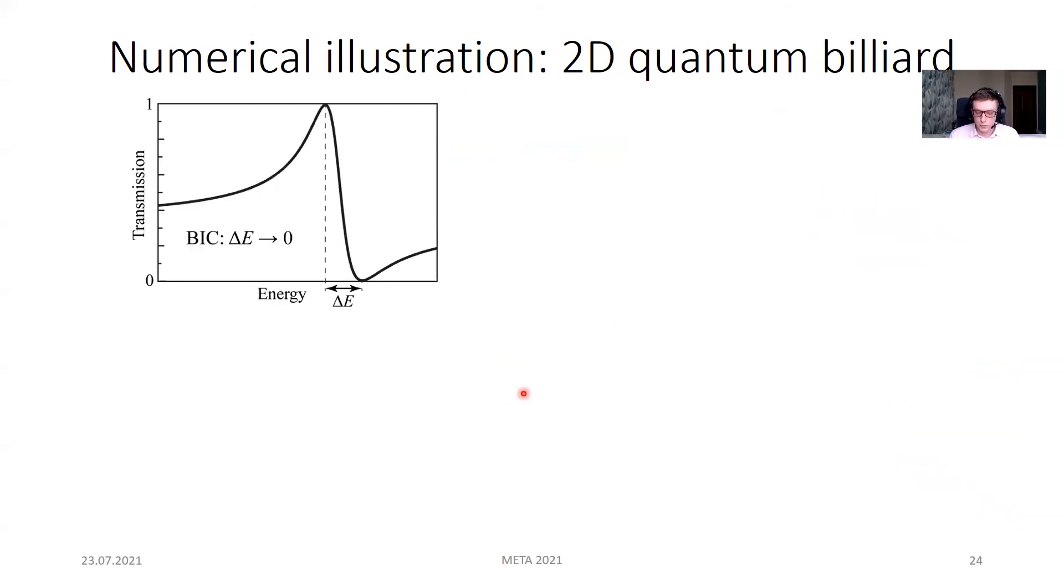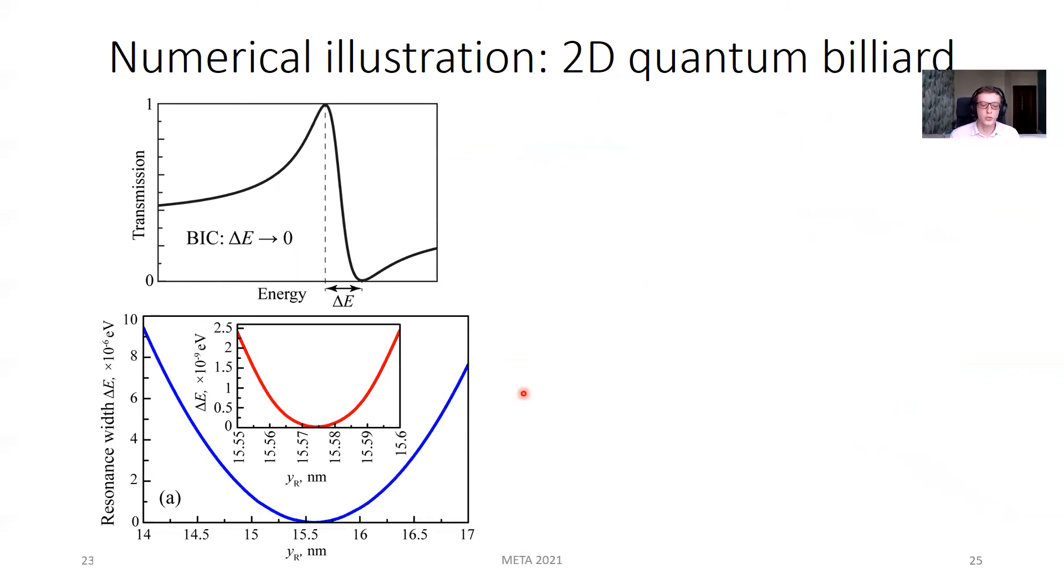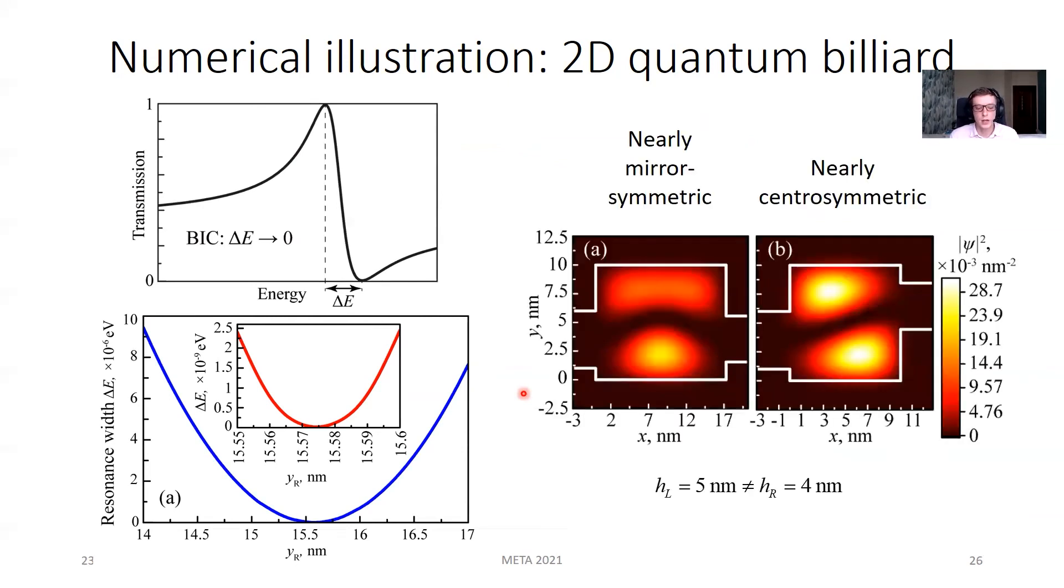For certain variable parameters, we get that this condition is satisfied for either nearly mirror-symmetric configuration point A or nearly central-symmetric configuration point B. From the scattering point of view, the BIC formation manifests itself as a collapse of Fano resonance where transmission zero and transmission unity coincide. The lower plot illustrates the numerically calculated Fano resonance width versus the position of the right waveguide in our quantum billiard example. One can see that at some point it turns to zero, which indicates the BIC formation. Here is a normalized density distribution for BICs in asymmetric quantum billiard with nearly mirror-symmetric configuration and nearly central-symmetric configuration.